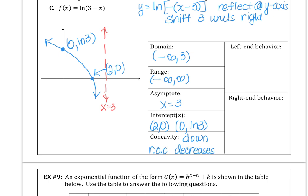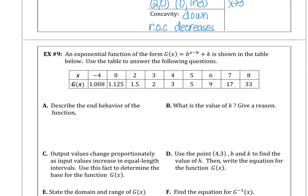And then the left-end behavior is over here. So the limit as f of x, the limit at negative infinity for f of x is positive infinity. And the right-end behavior is over here. So writing out that limit statement, the limit as we approach 3 from the left of f of x is going to negative infinity. So those aren't hard. You just have to be careful.